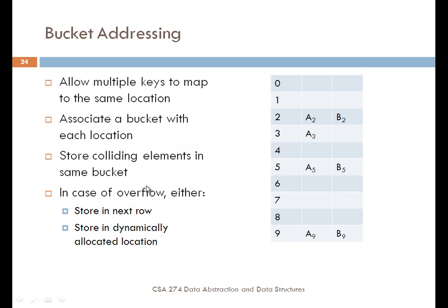Another approach for dealing with collisions is to use something called bucket addressing. Instead of having just a single array with an index, you have a two-dimensional array, and the number of columns is based on how many things you actually want to store. As you have collisions, you just add them to the next column in the array. If you have a collision, it goes into the same row. If we were to add something to A2 and have another collision, we would add it to the next available element in that row.